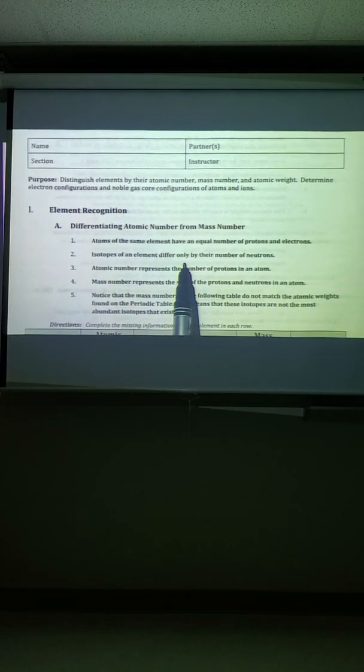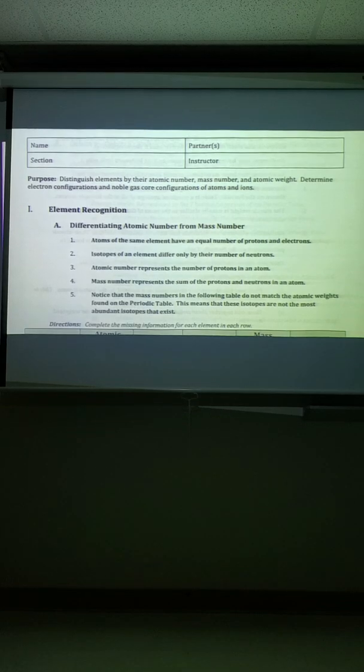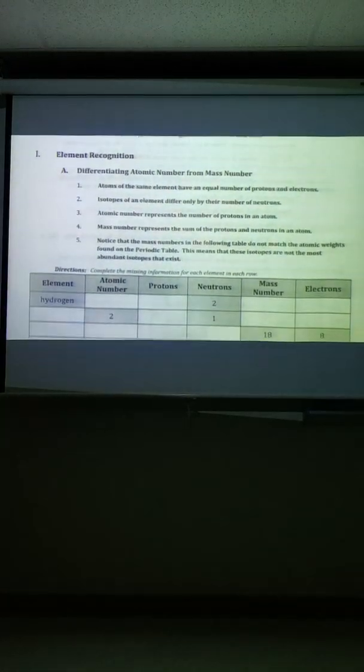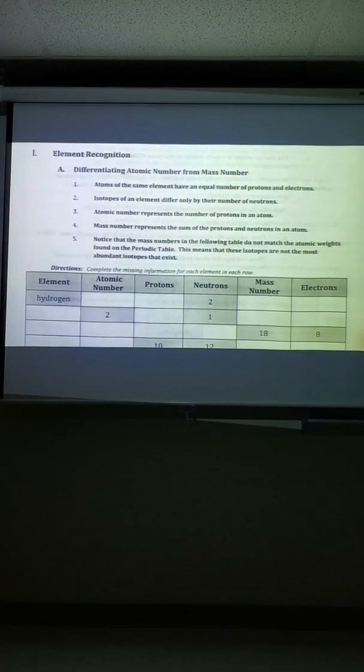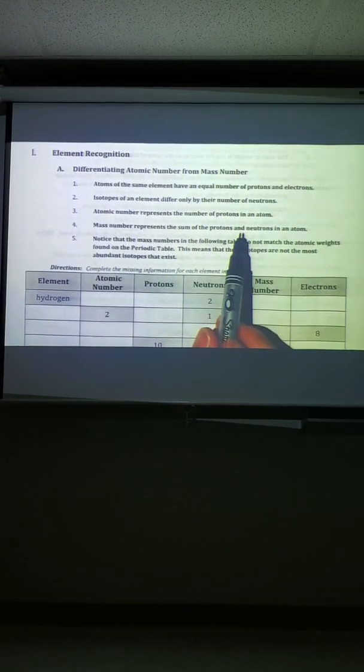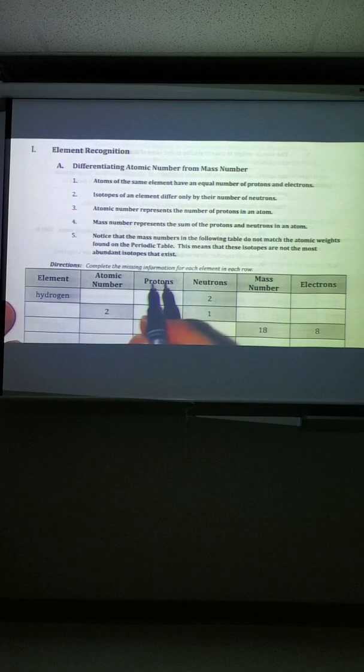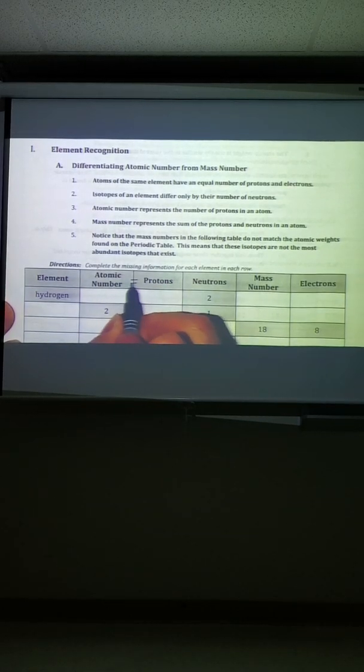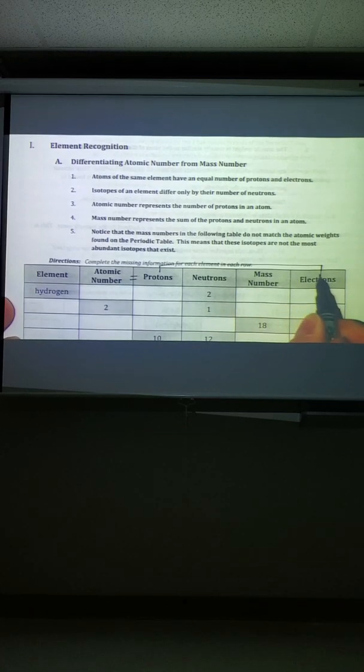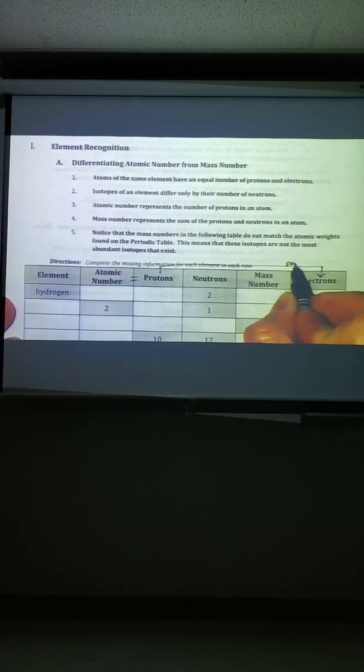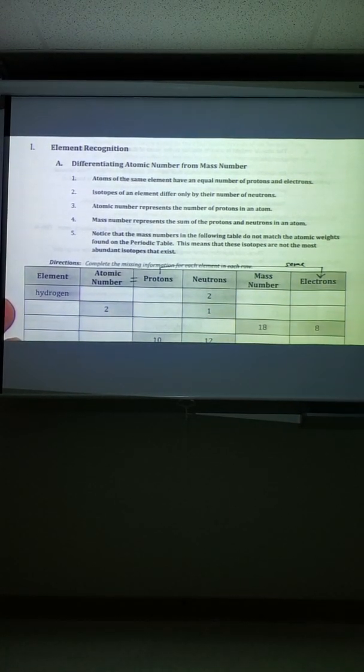Isotopes differ by the number of neutrons, so that column is different and I purposely chose examples down here that you couldn't cheat off of your periodic table to find. The atomic number represents the protons, so that's going to make these two columns equal, but again this column and this column, the electrons, those are going to be the same only because these are elements, not ions.